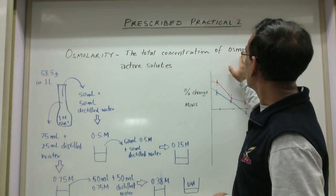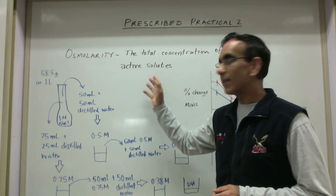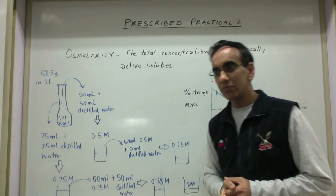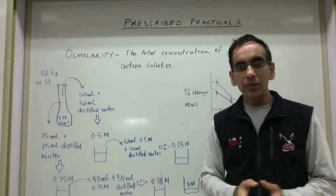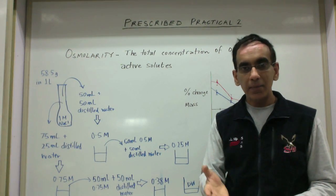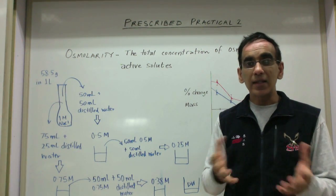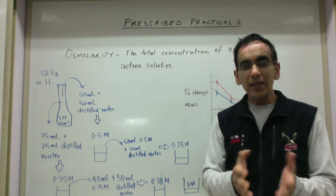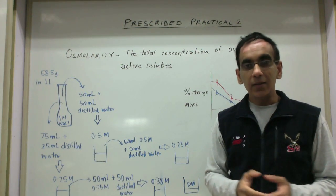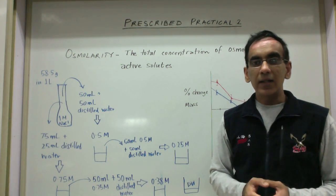Osmolarity, the total concentration of the osmotically active solutes. Things like potatoes, pumpkins, apples all contain cells which are mainly comprised of water but dissolved in that water are solutes.